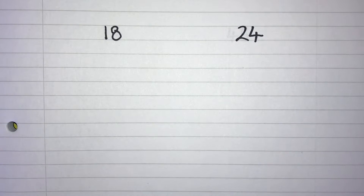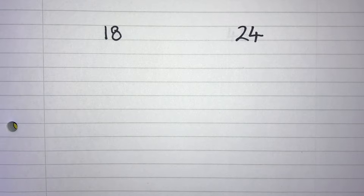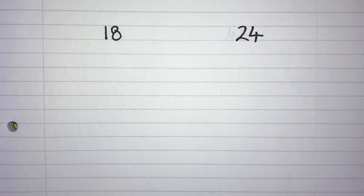Welcome back to Mr. Scott Maths. In this video we're going to take a look at finding the highest common factor and lowest common multiple of pairs of numbers using Venn diagrams. If there are any other topics you'd like me to cover just leave a comment down below and I'll get to that video as soon as I can. Also make sure to like and subscribe to make sure you don't miss any future videos.